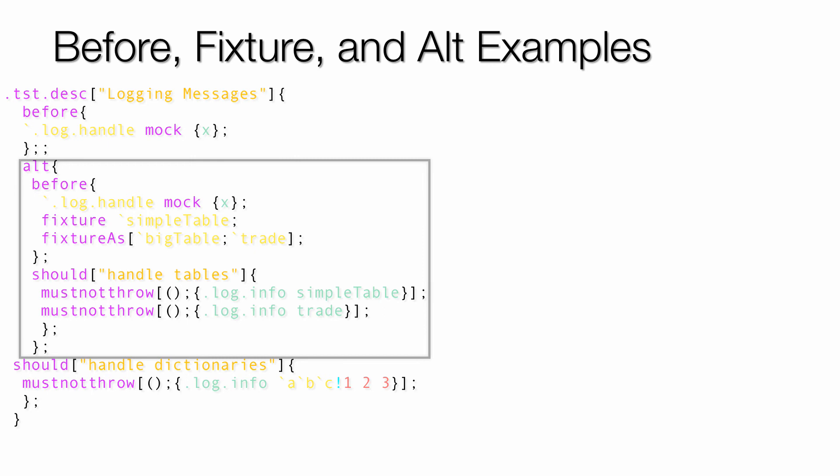What this means is that fixtures will only be loaded for the should expectation contained in the alt block. If you tried to refer to them in the last expectation, an error would occur. Notice that the first before block simply mocks out the handle to be used with an identity function, as seen in previous examples. Next, an alt block is used to set up a different before function that loads some table fixtures in. In the actual expectations, we first ensure that the logging facility can display tables, and then that it also can display dictionaries.